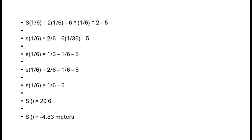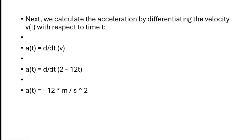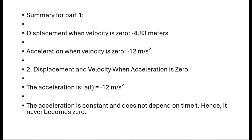So s(1/6) = minus 4.83 meters. Next, we calculate the acceleration by differentiating the velocity v(t) with respect to time t: a(t) = d/dt(2 minus 12t) = minus 12 m/s². Summary for Part 1: displacement when velocity is zero = minus 4.83 meters; acceleration when velocity is zero = minus 12 m/s².